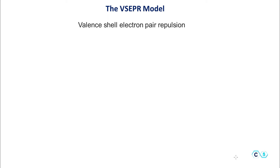We are going to talk about the VSEPR model or VSEPR theory, which is used to predict the geometry and structure of molecules. VSEPR stands for valence shell electron pair repulsion — a long and sophisticated name that sometimes makes students think this is a complicated subject. But in this video, I will try to convince you that it's not actually so bad.